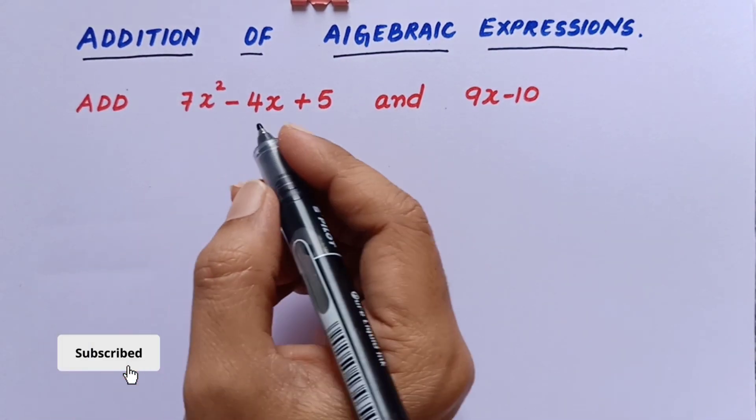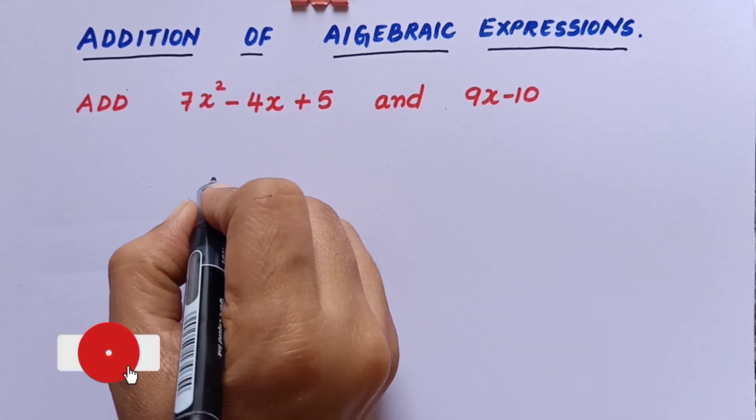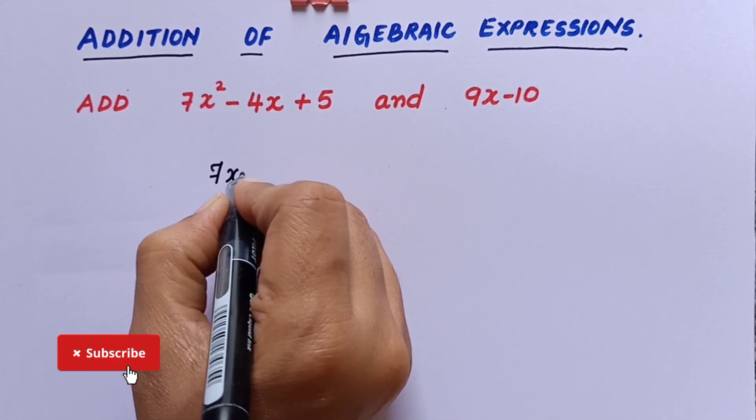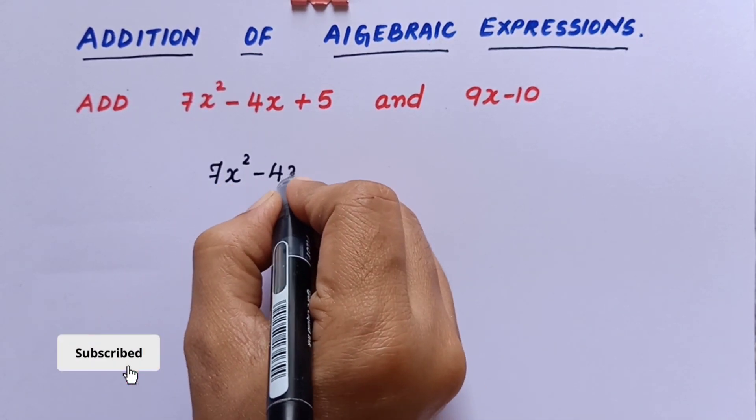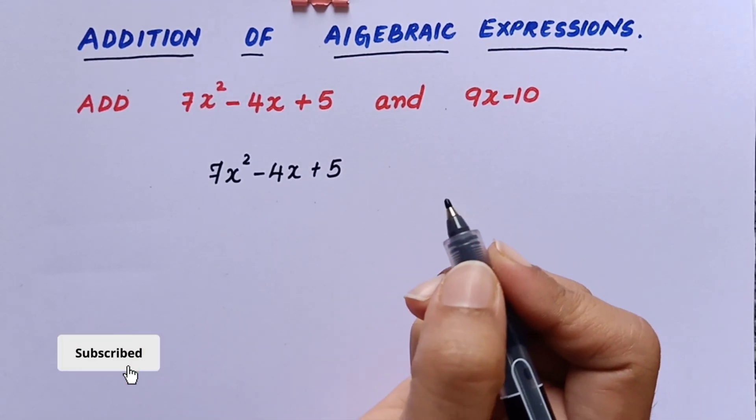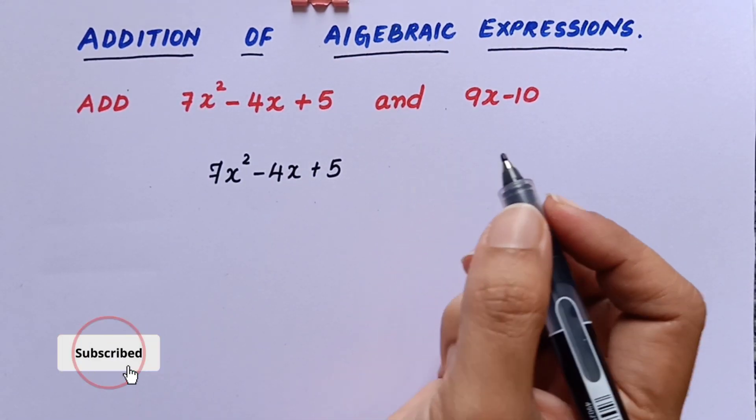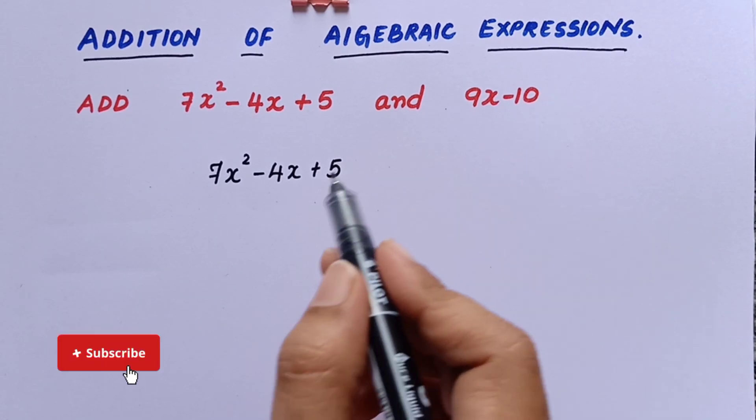Okay, first we'll write 7x² - 4x + 5. And in the next row we'll write 9x - 10, the second expression here.